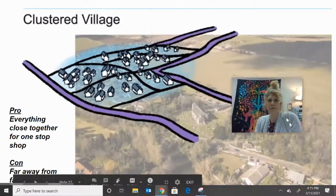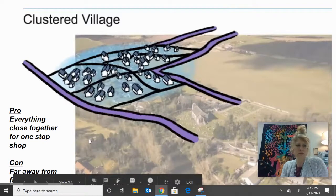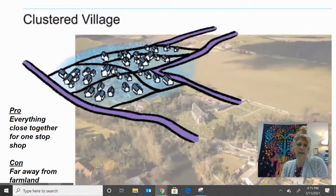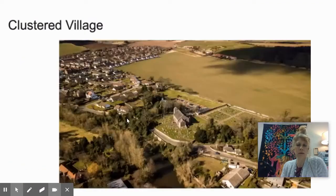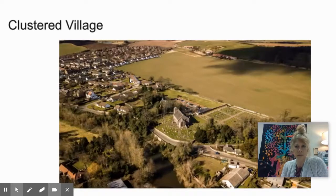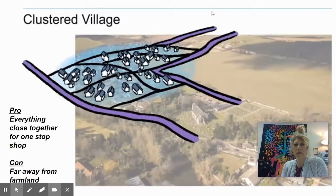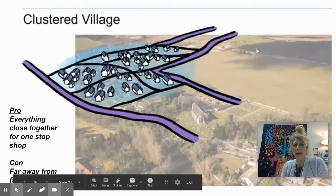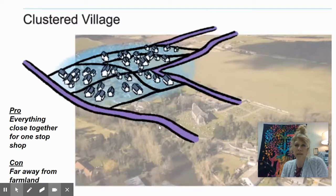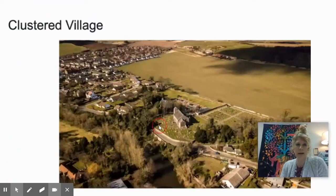If we look at the clustered settlement, I want to show you this overlay and how it looks in real life. You can tell that this is definitely a clustered settlement, and again this is what you see in Europe. Some pros are that everything is close together, but you do not have a good connection with your farmland, so people are having to make trips back and forth.